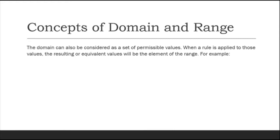How about the concepts of domain and range? The domain can be considered as a set of permissible values — it is the independent variable. When a rule is applied to those values, the resulting equivalent values will be the elements of the range. Once the rule is applied to the domain's permissible values, the result is what we call the range.